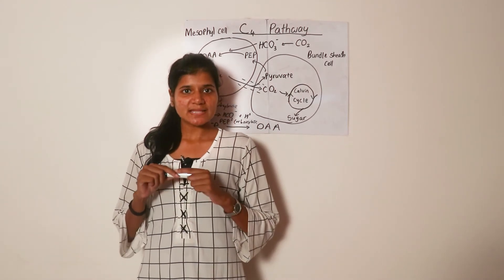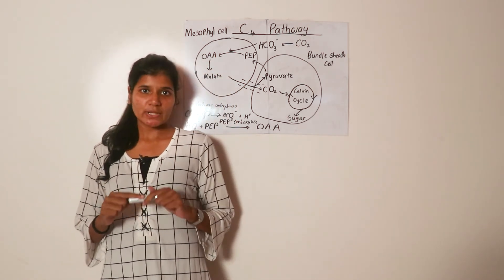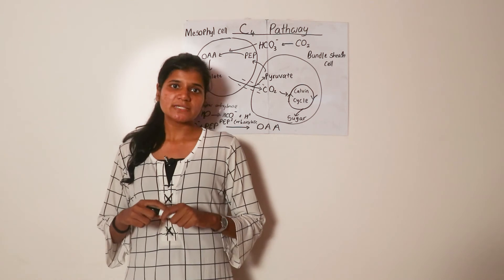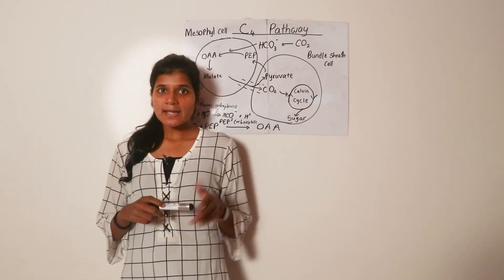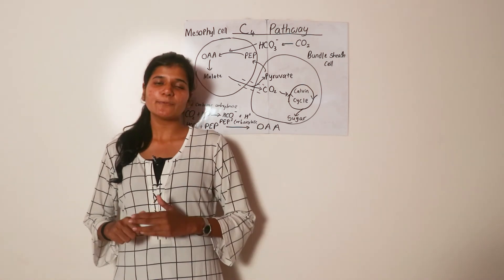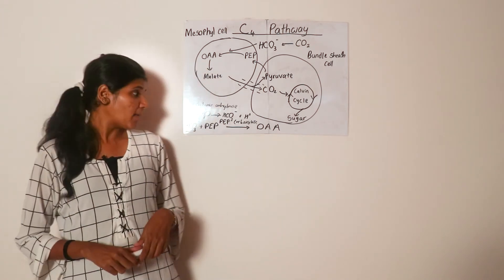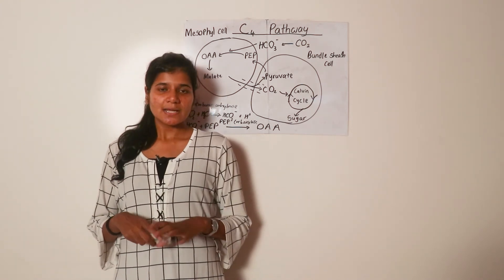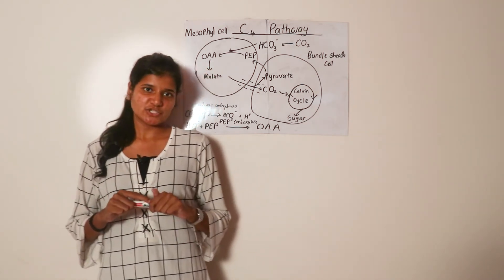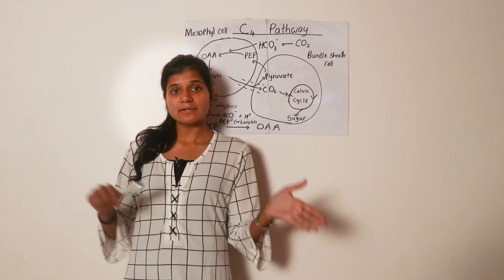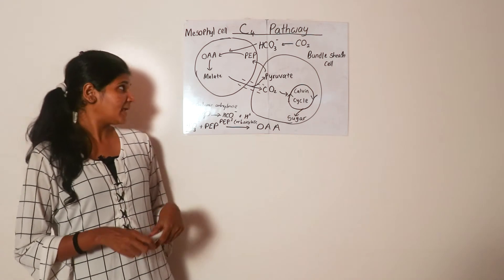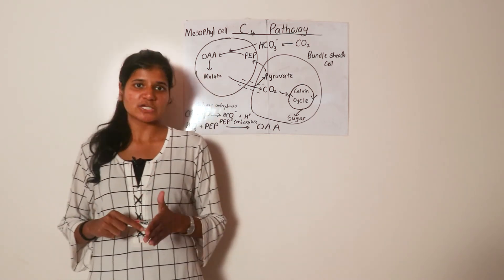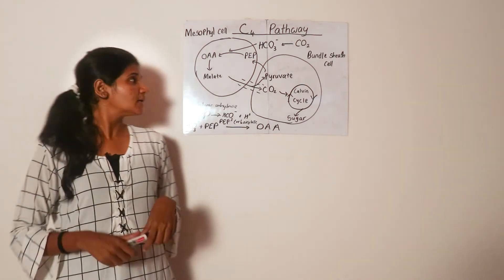PEP carboxylase is much more efficient than RuBisCO for two reasons. First, it reacts with bicarbonate ions and not carbon dioxide directly — the advantage being that bicarbonate is 50 times more soluble in the cytoplasm of mesophyll cells than carbon dioxide. Bicarbonate is an ion, so it is much more soluble in water. Second, PEP carboxylase does not react with oxygen like RuBisCO does. We know RuBisCO reacts with oxygen leading to photorespiration, but PEP carboxylase does not. Due to these two reasons, PEP carboxylase is much more efficient than RuBisCO.